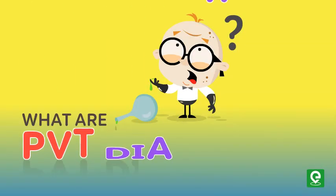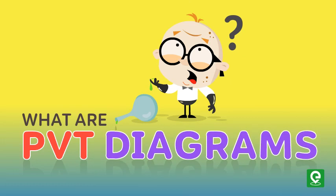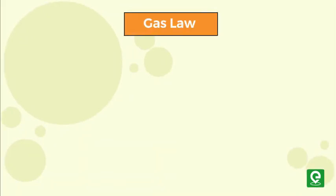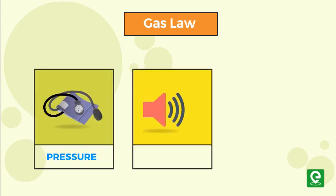What are PVT diagrams? Ideal gas law states that a system can be described by three thermodynamic variables: pressure, volume, and temperature.